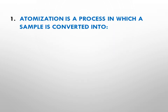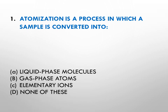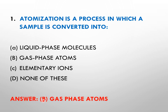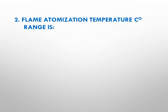Here is the first question: atomization is a process in which a sample is converted into — let's see the options: A is the liquid phase molecules, B is the gas phase atoms, C is the elementary ions, while D is none of these. The right answer is option B, that is gas phase atoms. In atomization, the sample is converted into gaseous atoms.